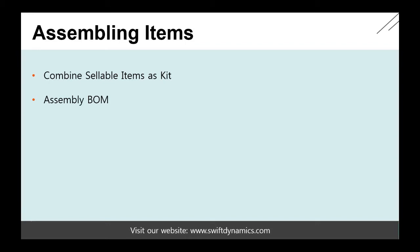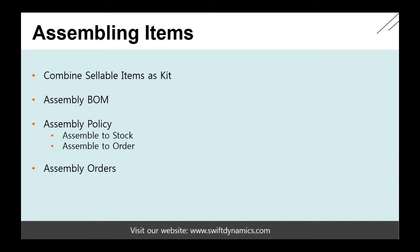This is something we will do by setting up an assembly bill of material. We will use an assembly policy which can be assembled to stock or assembled to order. We will have a look at how we can assemble items that we typically want to put on stock, and in Trade and Dynamics NAV you will see how we can manage assembled to order processes. The assembly itself is done based on assembly orders, and we will also cover how we can use and manage these assembly orders.